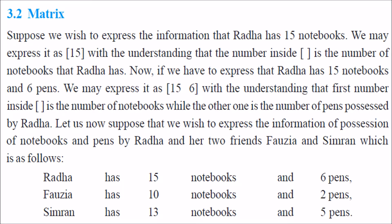Radha has 15 notebooks. We can express it like this: 15, with the understanding that this number inside the square bracket is the number of notebooks Radha has. Now we also need to express that Radha has pens — so 15 books and 6 pens. We employ 15 for her books and 6 for her pens.